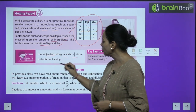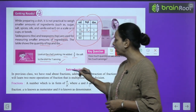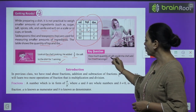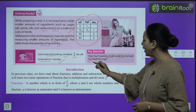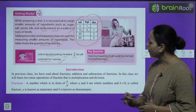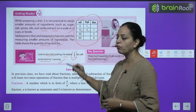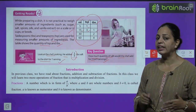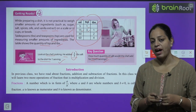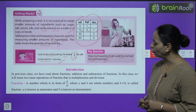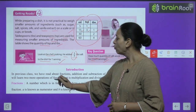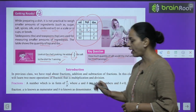Look at the chef cooking — he added 3/4 tablespoon of salt to the dish for 1 serving. Key question: how much quantity of salt would the chef add for 2 such servings? So here you have 3/4 for 1 serving, and for 2 servings — this is the fraction concept.